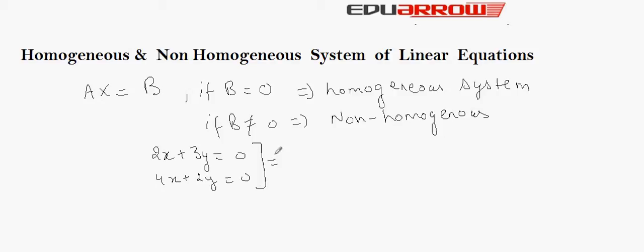This system of equations is a homogeneous system because here the value of B is 0.